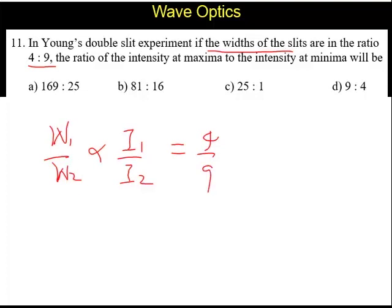Now, what is the ratio of intensity at maximum and intensity at minima? We know that intensity is directly proportional to the square of the amplitude. So 4:9 equals A1 squared by A2 squared.